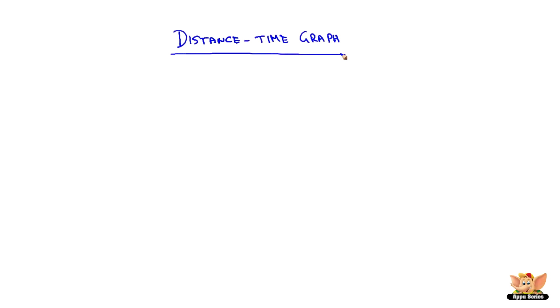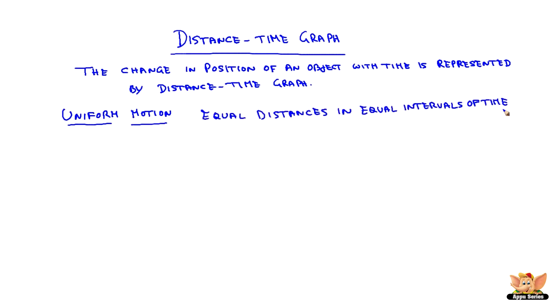Distance-Time Graph. The change in position of an object with time is represented by a distance-time graph. Let us see the distance-time graph for uniform motion. In uniform motion, the object travels equal distances in equal intervals of time.